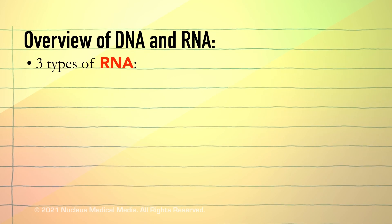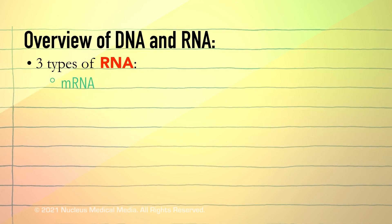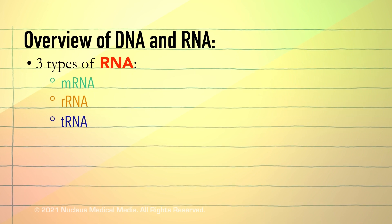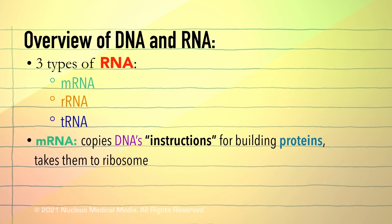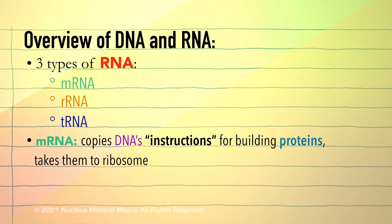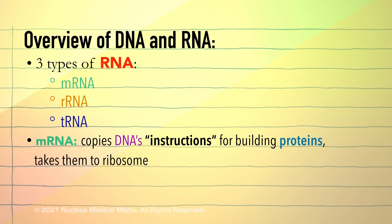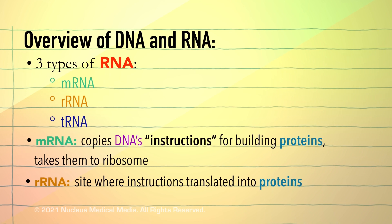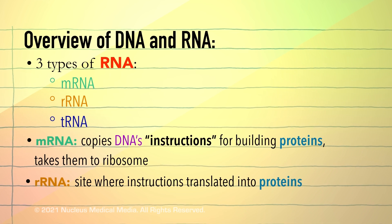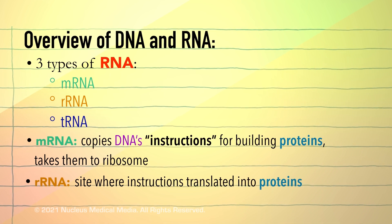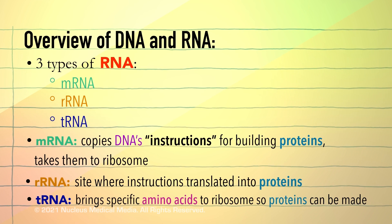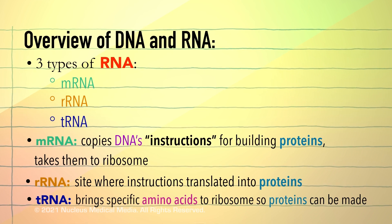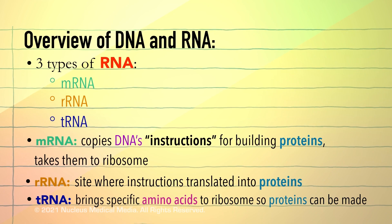There are three types of RNA: messenger RNA, ribosomal RNA, and transfer RNA. RNA copies the instructions for building a protein and takes them to a ribosome. Ribosomal RNA is the site where the instructions are translated into a protein. Transfer RNA brings specific amino acids to the ribosome so the correct proteins can be made.